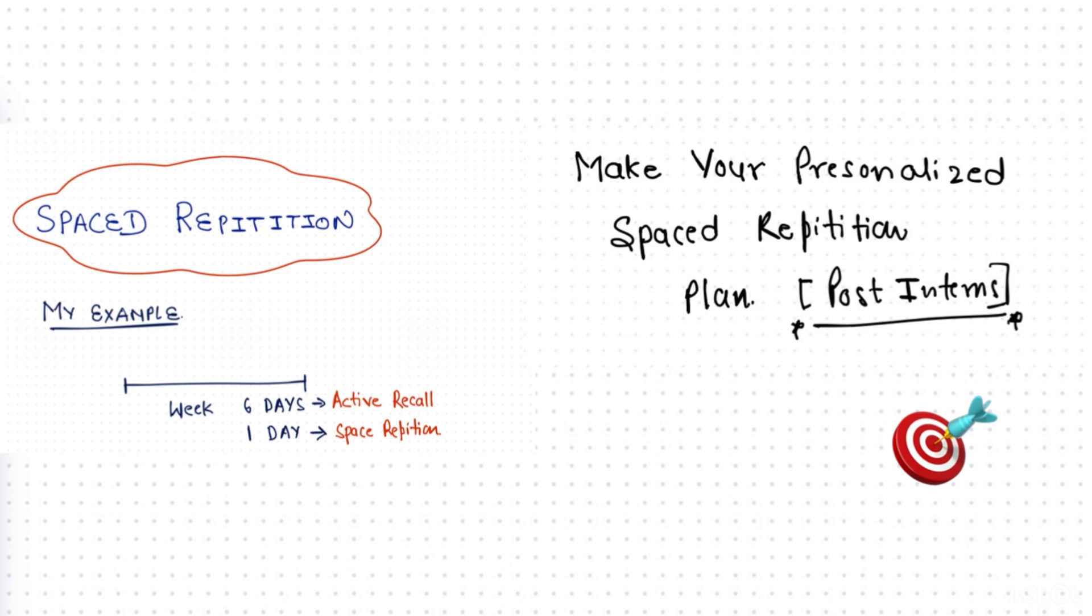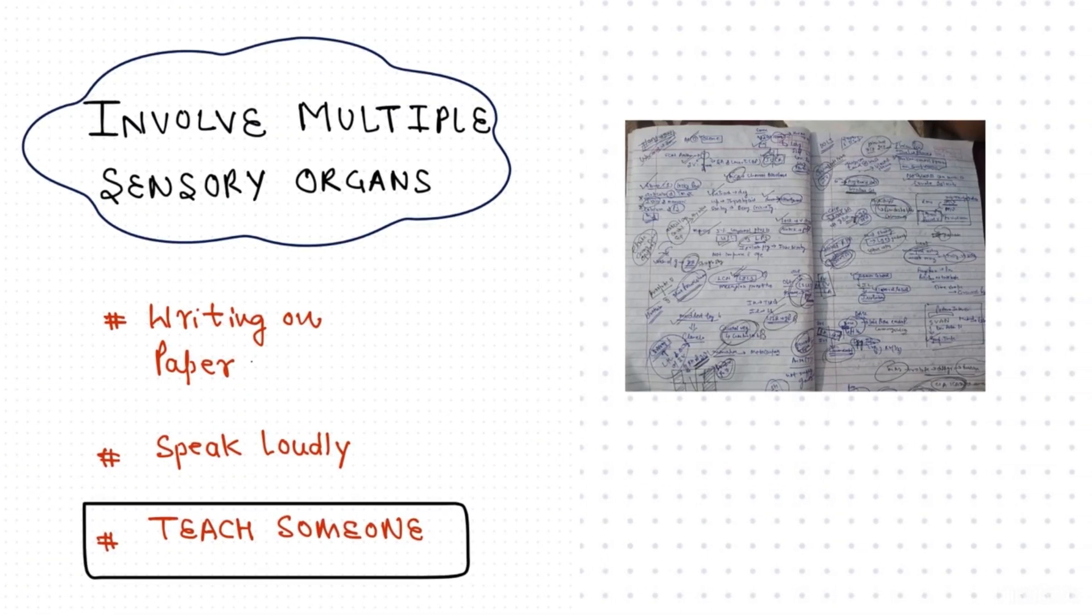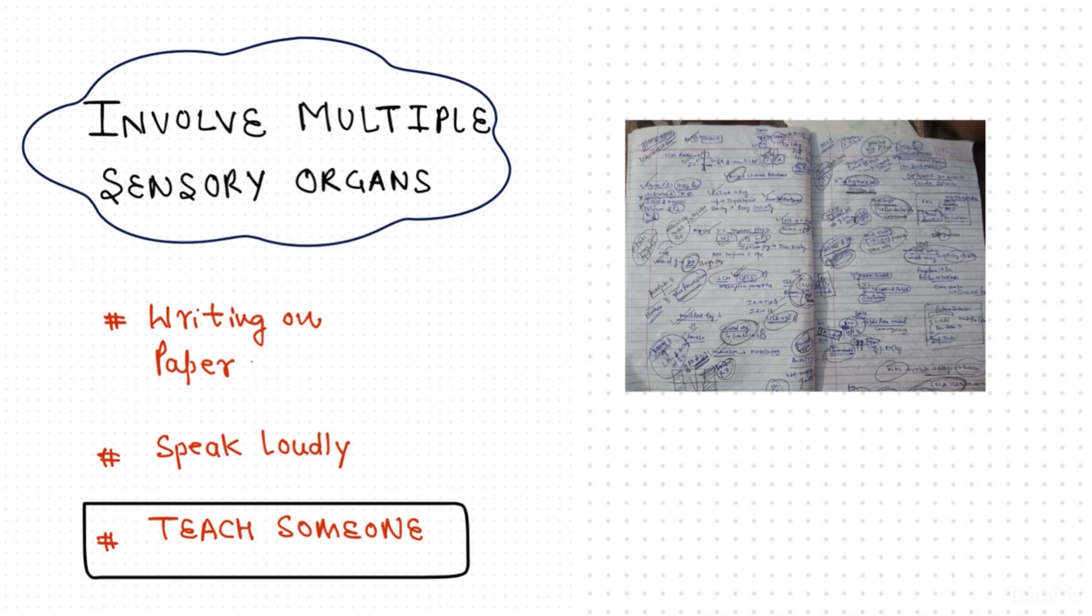Now friends, coming to the third technique and this is a special one. Because I used this from my undergraduate phase also. So the third technique is basically use multiple sensory pathways for active recall. Let me explain. Don't just recall using your mind. I recall using writing on a paper or speaking out loud. Sometimes I pretend to teach concepts to a group of imaginary students.